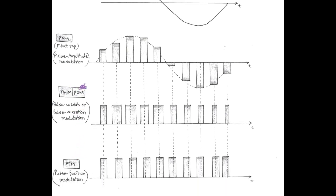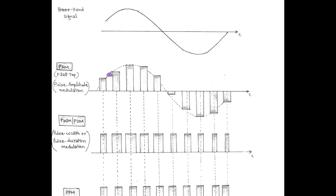Pulse width modulation is also called pulse duration modulation. In PAM, that is pulse amplitude modulation, the amplitude of the periodic pulse train with constant width, called the carrier signal, is varied continuously in accordance with the message signal. Here practically we use a flat top sampling process with the help of a sample and hold circuit.